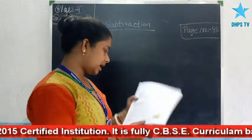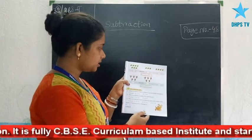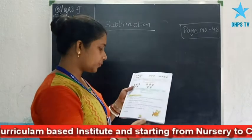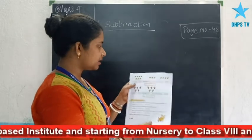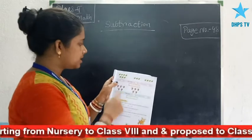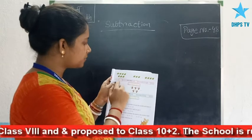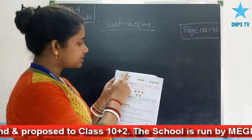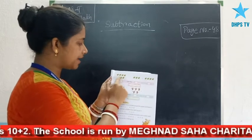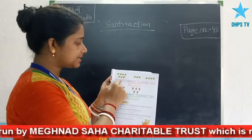Now turn to page number 49. Two tasks have been given. In the first task you can see some pictures of leaves. First, count the total number of leaves: 1, 2, 3, 4, 5, 6, 7 — that's 7 leaves. So write 7 here.